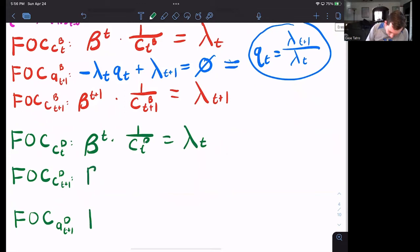Bill's consumption tomorrow is beta T plus one, one over CT plus one D, and that's equal to lambda T plus one.